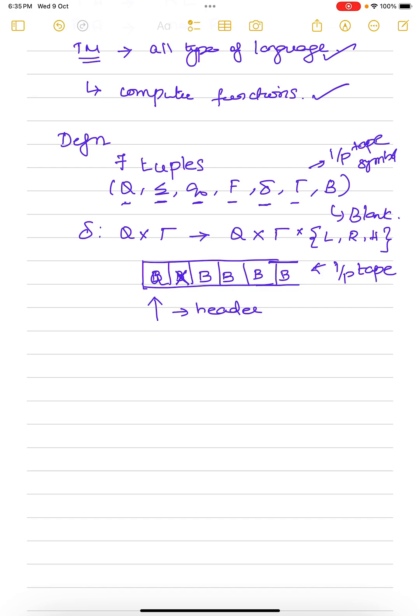Whereas in pushdown automata, we had an input tape and we had a pointer to that tape. We called that pointer as X pointer. And we had a stack data structure. And we had a pointer for that stack. We called that Y data structure, Y pointer. So, here, no such X pointer, Y pointer exist in Turing machine.